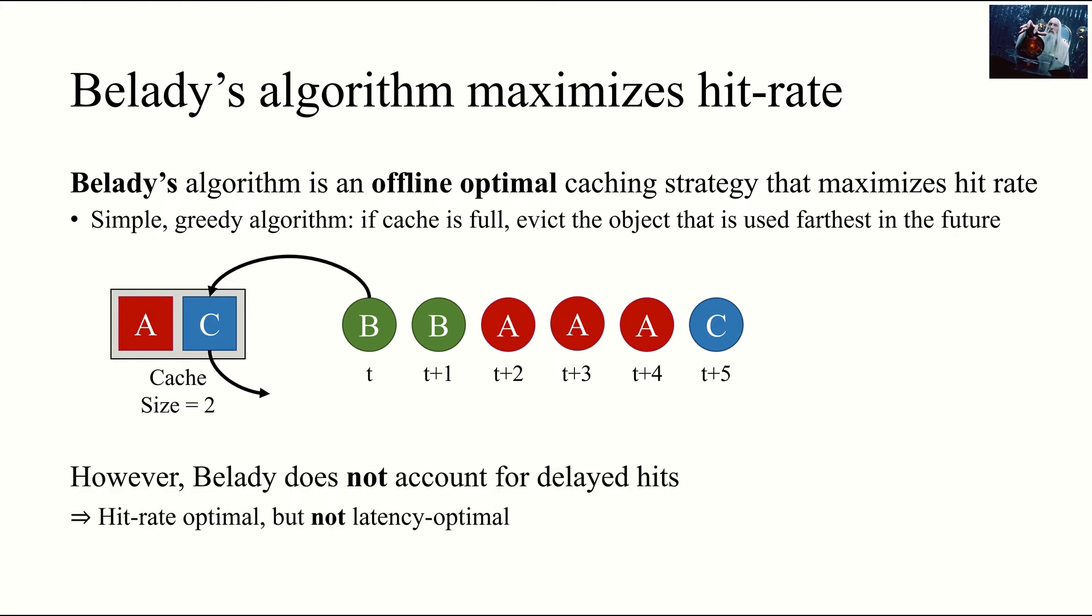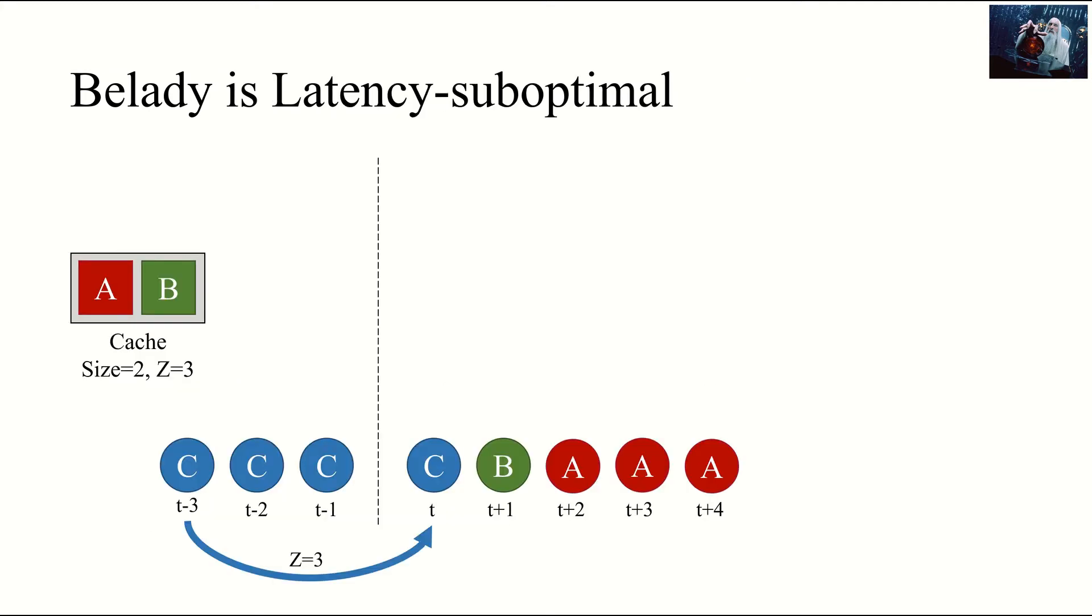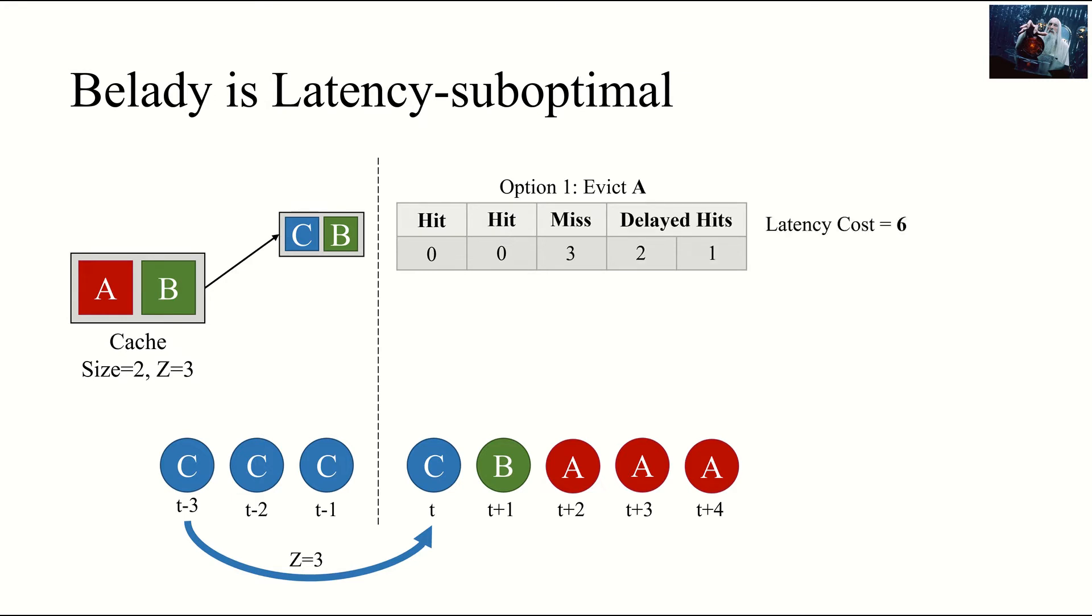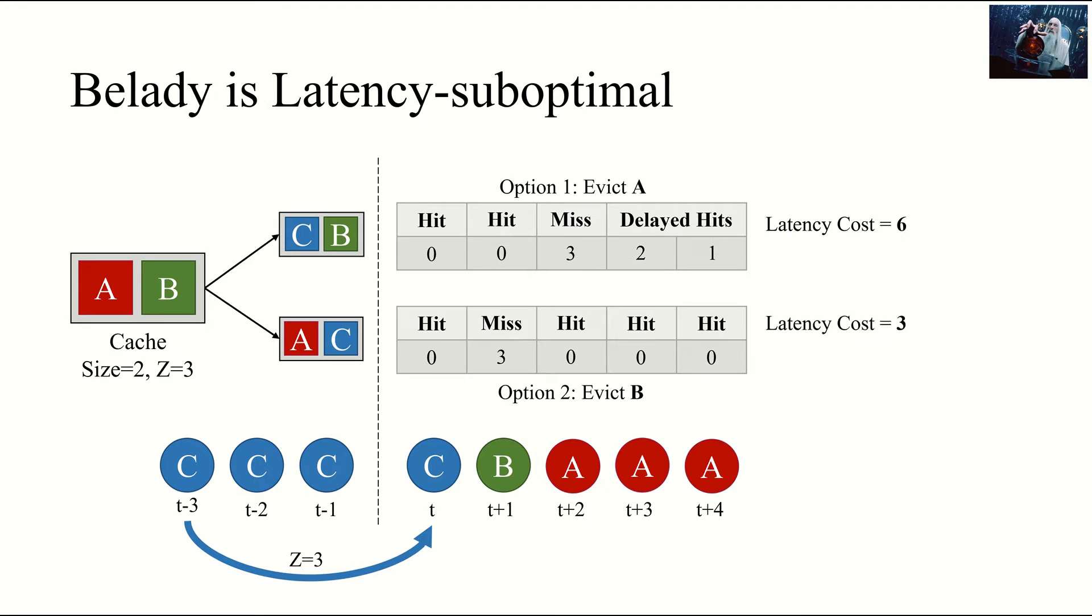Unfortunately, Belady does not account for delayed hits. And this leads it to make latency suboptimal decisions. Here's a toy example demonstrating this. In this case, we have a cache of size 2 and a Z value of 3. A fetch for object C has just completed, and we must decide whether to evict object A or B to accommodate C. Let's say we choose to evict A. The subsequent request to objects C and B will be hits. However, we see that there's a burst of request to object A, resulting in a miss and two delayed hits. This yields a total latency cost of 6. Instead, if we had chosen to evict B, the request for B at time t plus 1 would have incurred a cache miss, but the subsequent accesses to A would have all been hits, resulting in a latency cost of 3. As you might have guessed, Belady chooses the first option, resulting in a worse overall schedule.